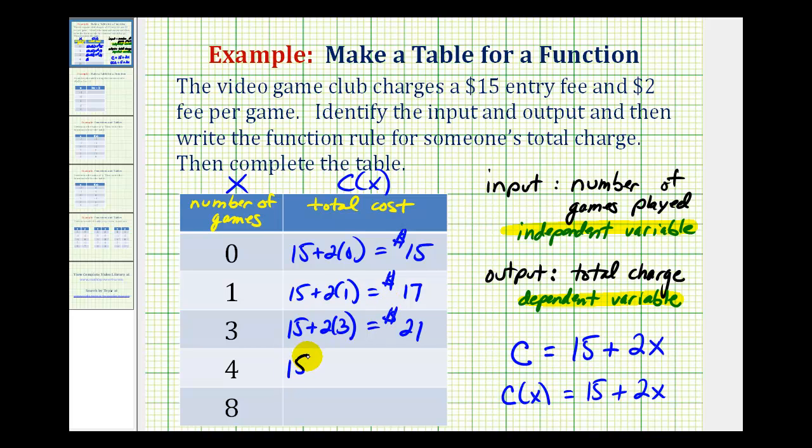And if someone plays four games, 2 times 4, 15 plus 8 is $23. And then the last input is eight for eight games, so if someone plays eight games, it'd be 15 plus 2 times 8. Well, 2 times 8 is 16, 15 plus 16 is 31, so the total charge would be $31. And that'll do it for this example.